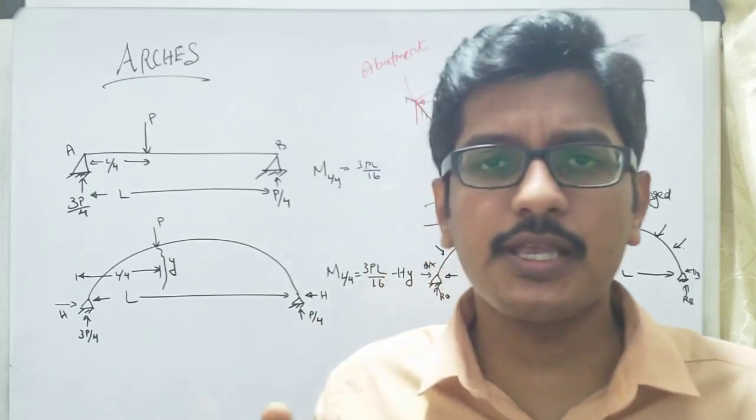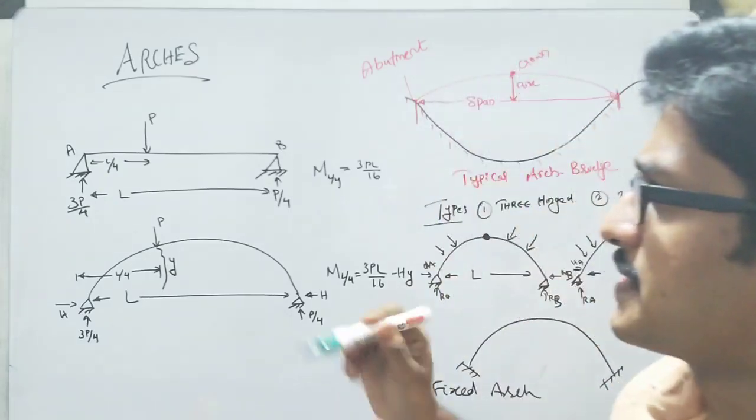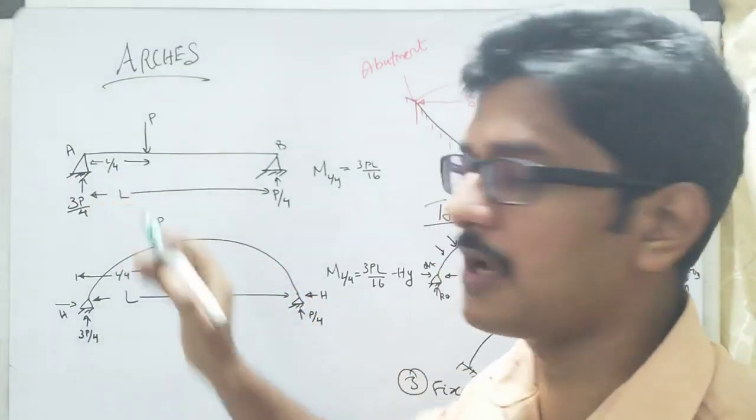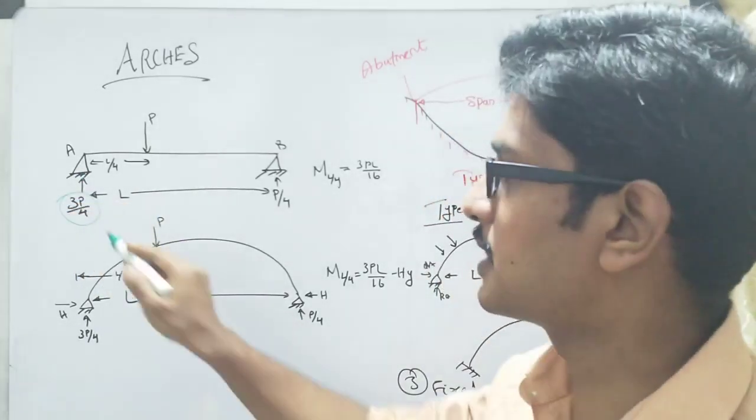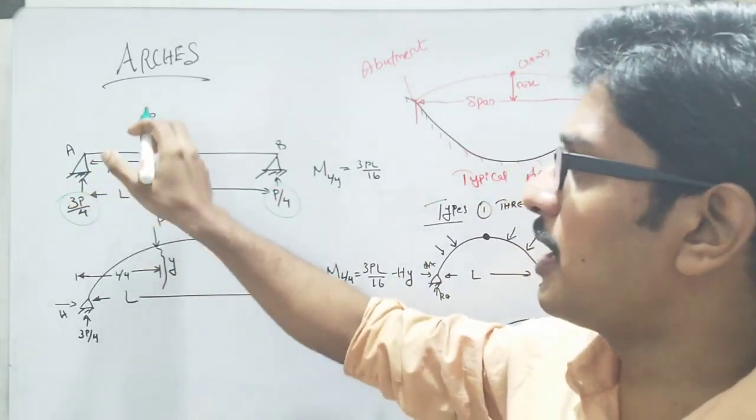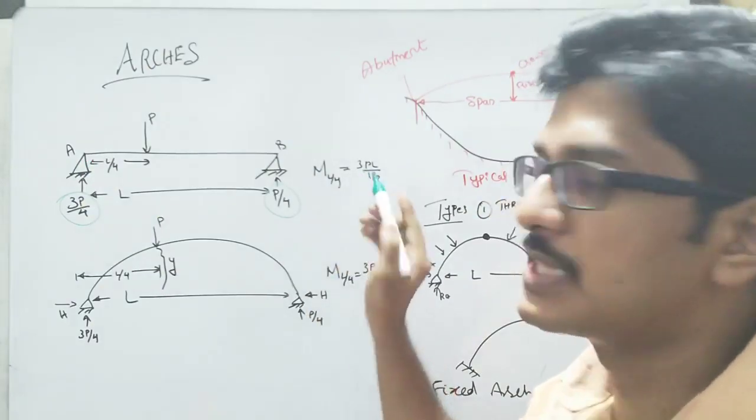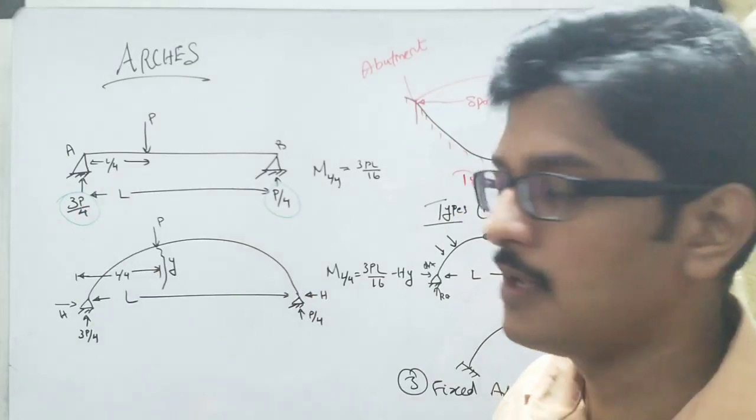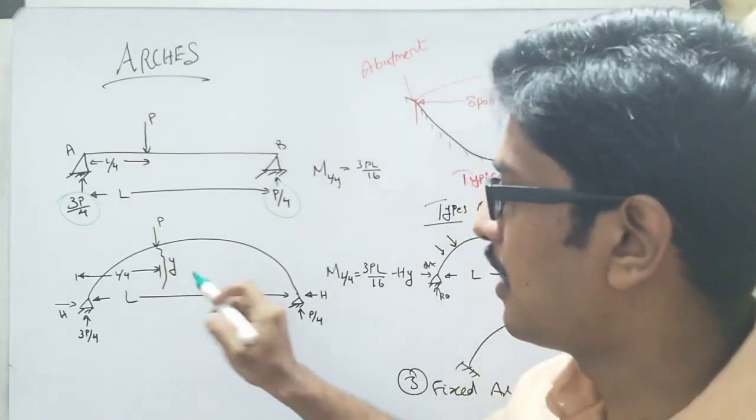For the first case, why arches are used instead of beams, I will explain with an example. Let us consider a simply supported beam with a point load P acting at a distance L by 4 from end A. If you take the reactions, you will get 3P by 4 and here P by 4. Then, if you consider the moment at this point L by 4, the moment will be 3PL by 16, that is 3P by 4 multiplied by L by 4 distance.